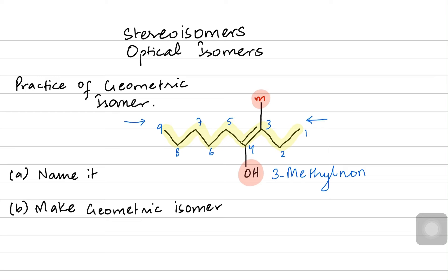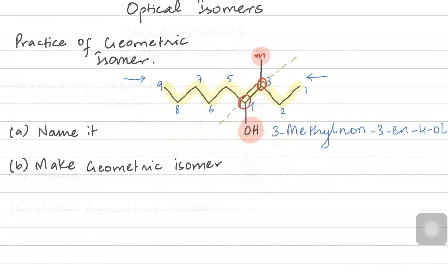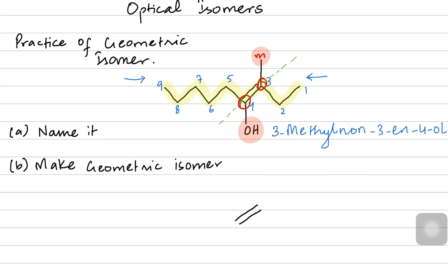After 3-methyl, you'll call it 'non' because there are nine carbons, but you won't call it nonane — it will be nonene because there is a double bond on carbon 3. So it's 3-methylnon-3-ene.